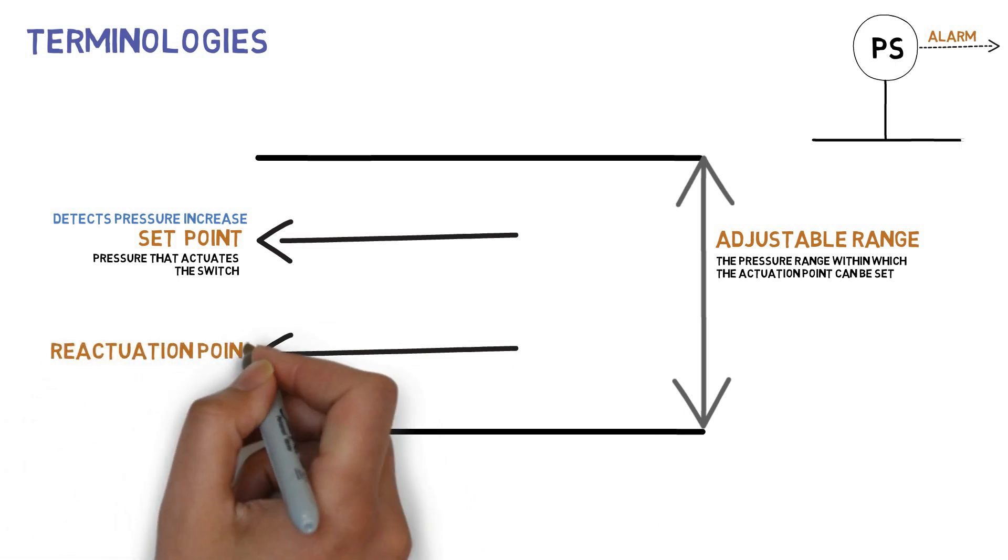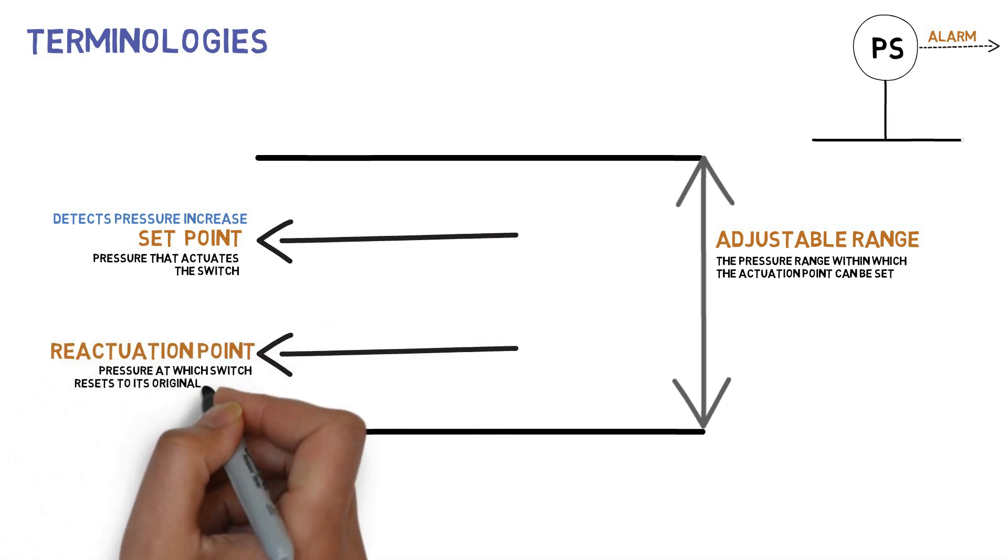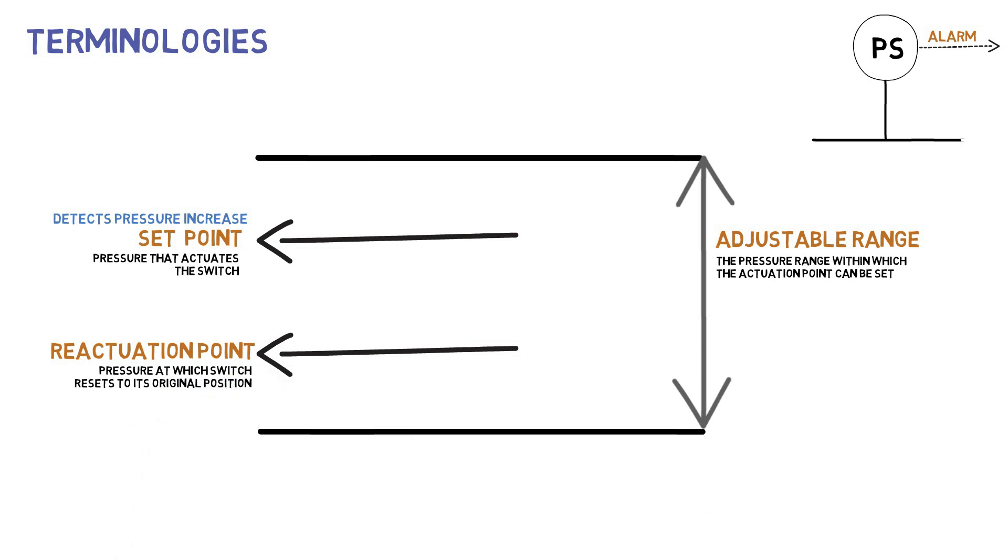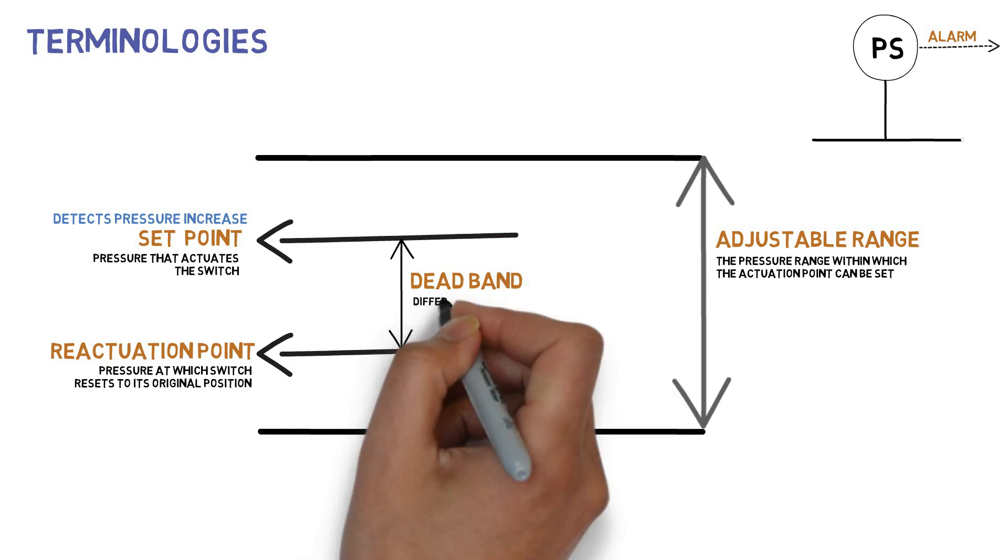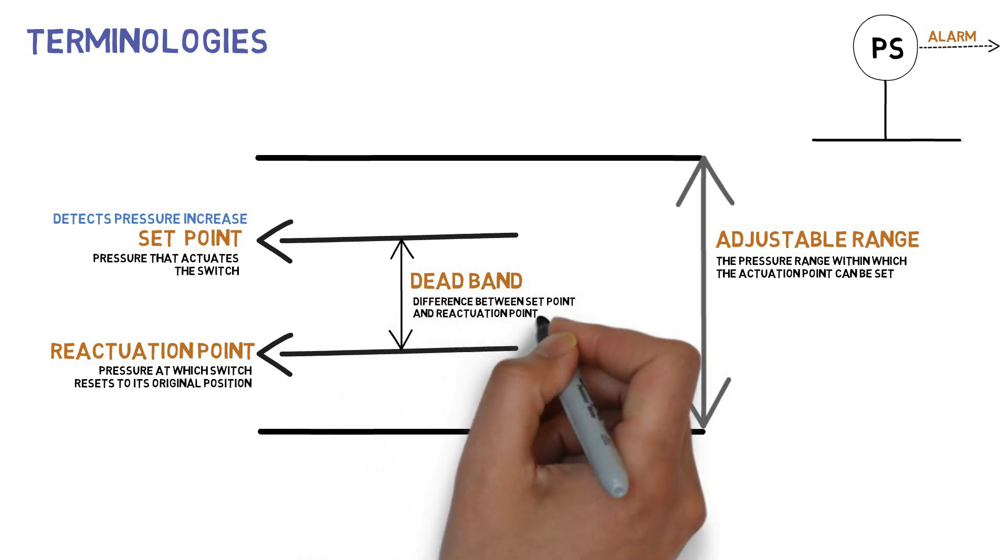Reactuation point is the pressure at which the switch resets to its original position. Dead band is the difference between set point and reactuation point.